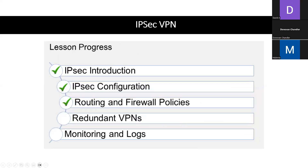Let's go through a knowledge check. Question one: Which IPsec VPN type is legacy and not recommended for new deployments? Is it A, route-based VPN, or B, policy-based VPN? The answer is B — policy-based VPN. Correct.